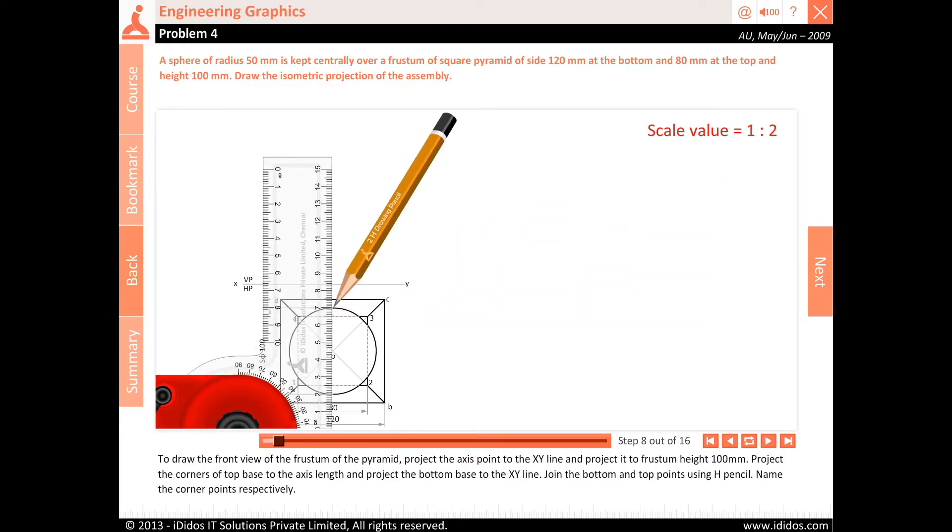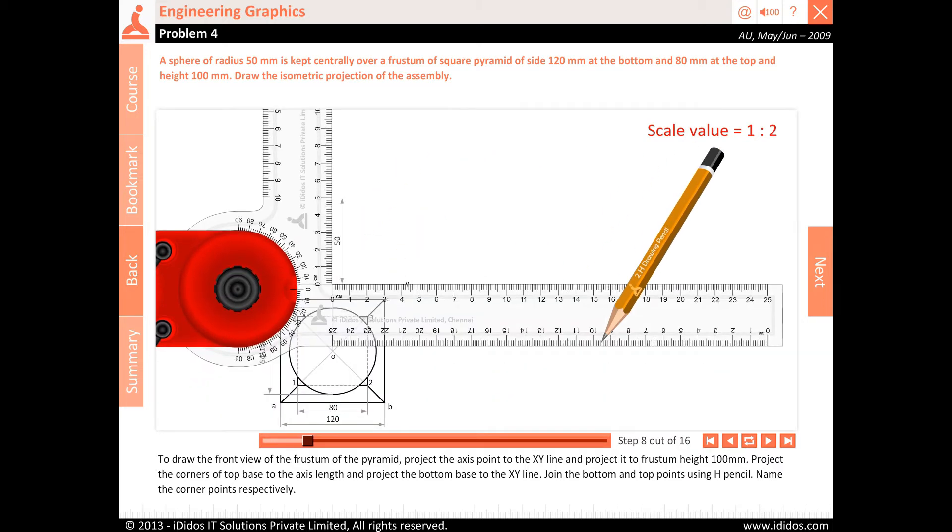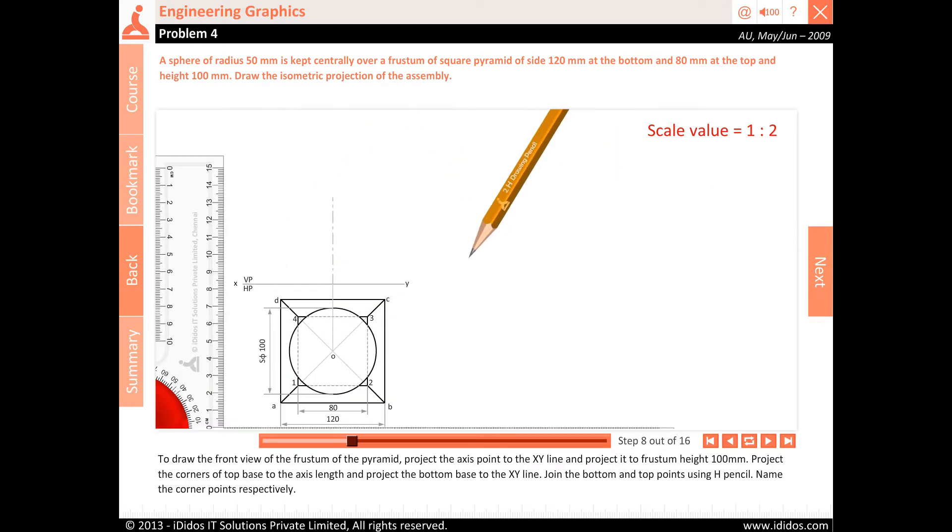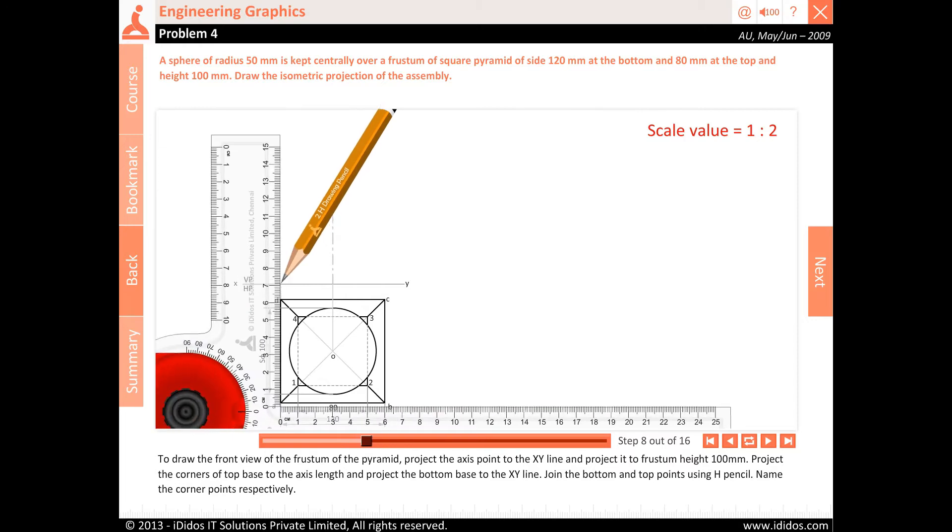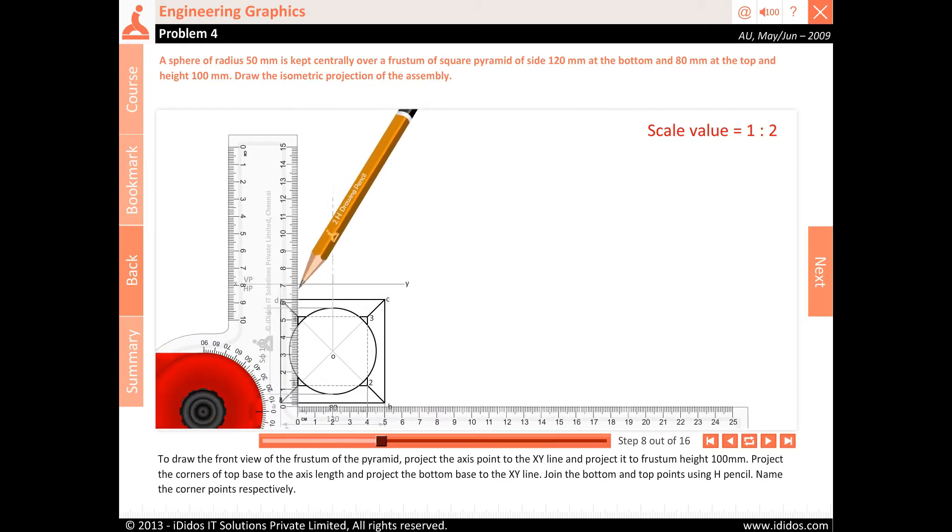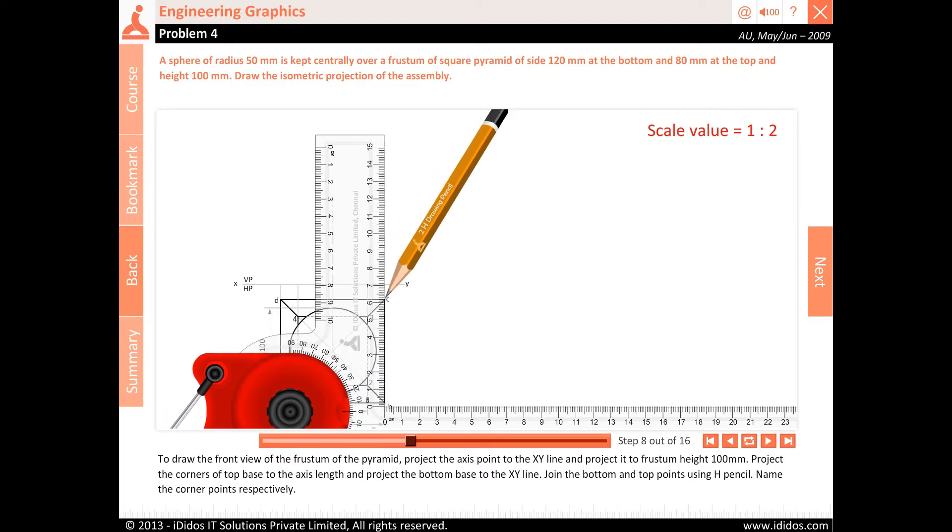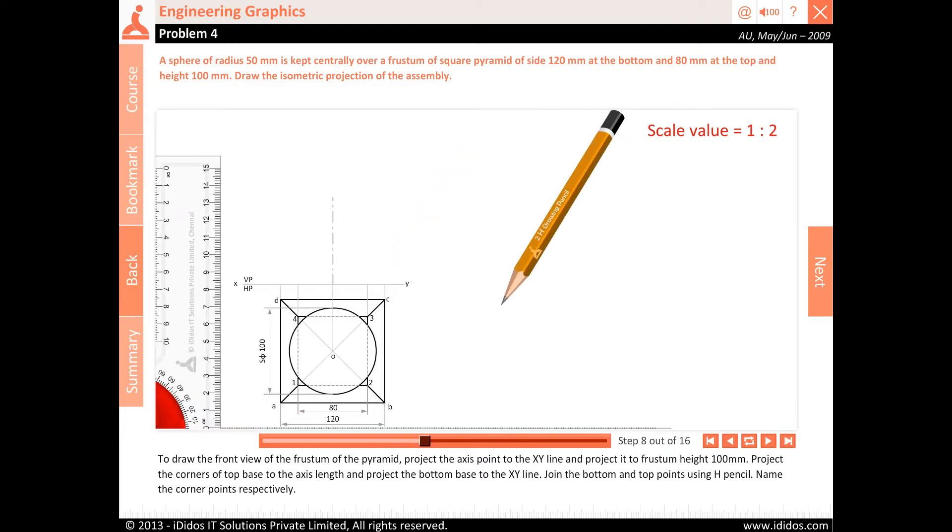To draw the front view of the frustum of the pyramid, project the axis point to the XY line and project it to frustum height 100 mm. Project the corners of top base to the axis length and project the bottom base to the XY line. Join the bottom and top points using H pencil. Name the corner points respectively.